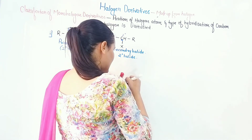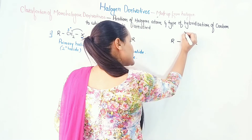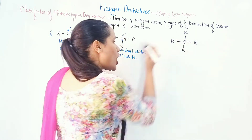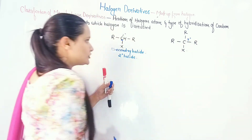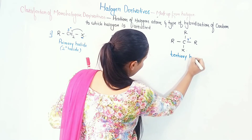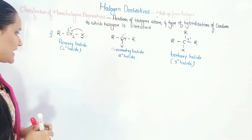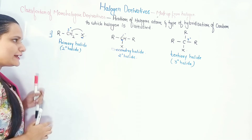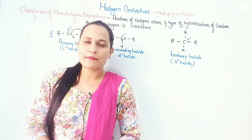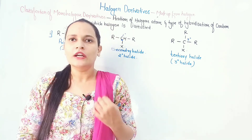So to summarize: if my halogen is attached to a primary carbon, it is a primary halide; if attached to a secondary carbon, it is a secondary halide; and if attached to a tertiary carbon, it is a tertiary halide. That is the classification of monohalogen derivatives into primary, secondary, and tertiary halides. Moving further, the second classification of monohalogen derivatives is allylic halide.